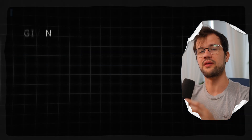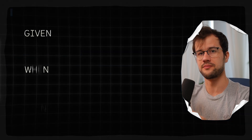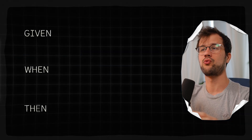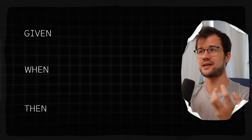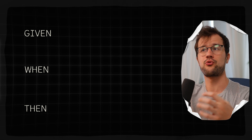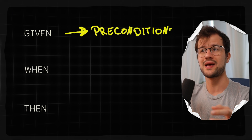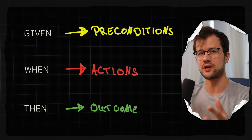A common principle for writing unit tests in any language is the given-when-then principle. This describes the preconditions, actions, and actual outcome. So let's write our first unit test.